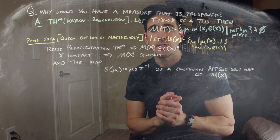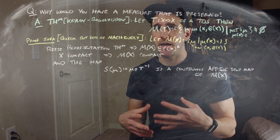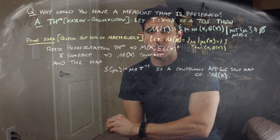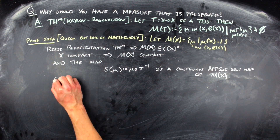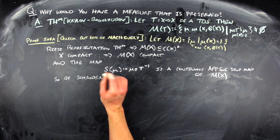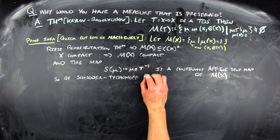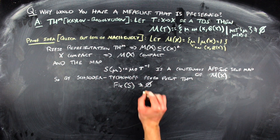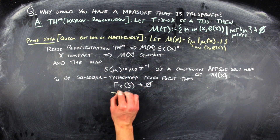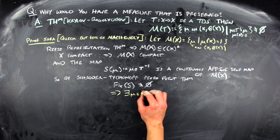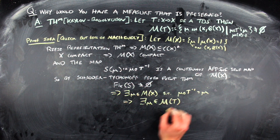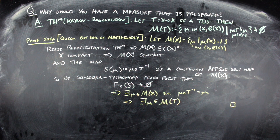From probability theory, a mixture of Borel probability measures is again a Borel probability measure, so M(X) is convex. The Schauder-Tychonoff Fixed Point Theorem says that any continuous self-map of a non-empty closed convex subset of a Banach space has a fixed point. Since S was a continuous affine map, S has a fixed point — meaning there exists a measure equal to that measure composed with the pre-image, giving us a T-invariant Borel probability measure.